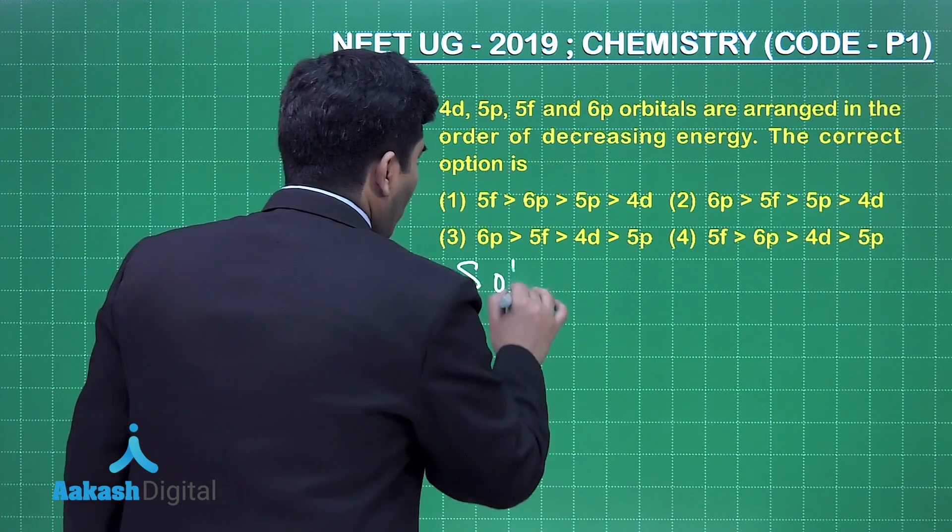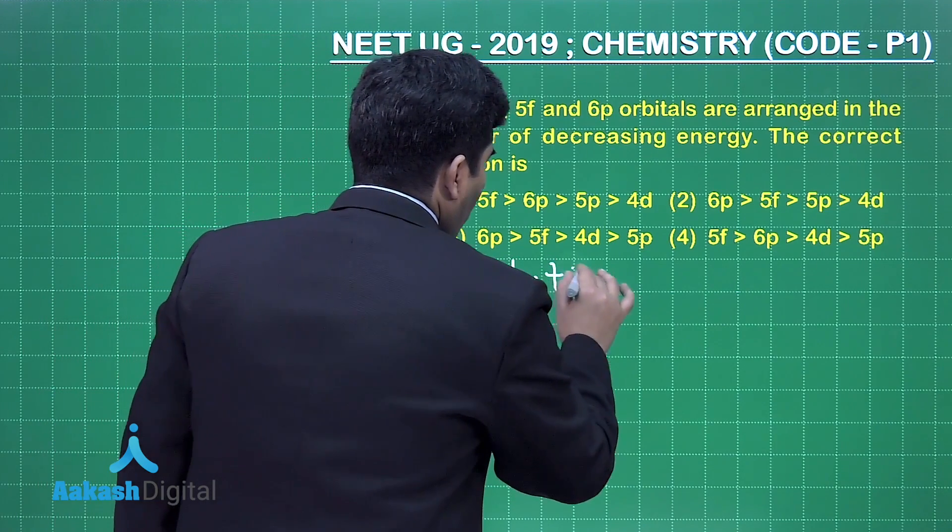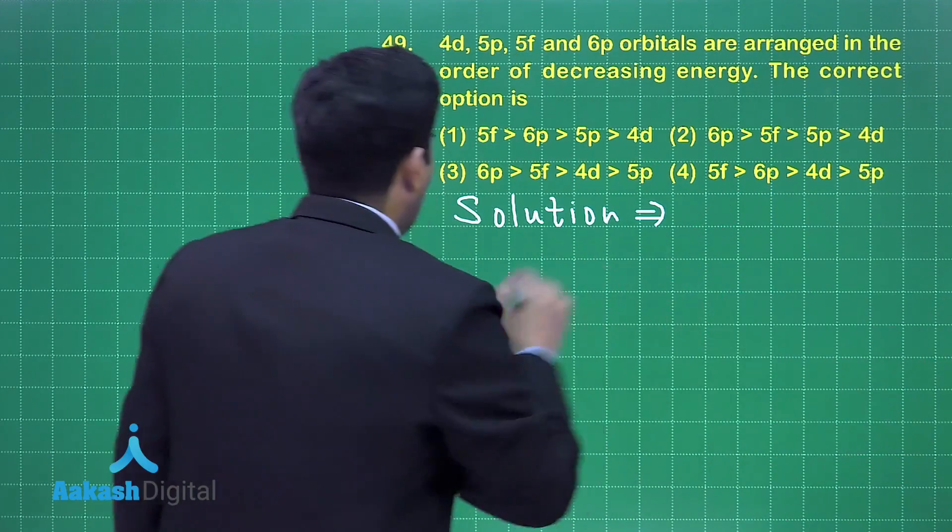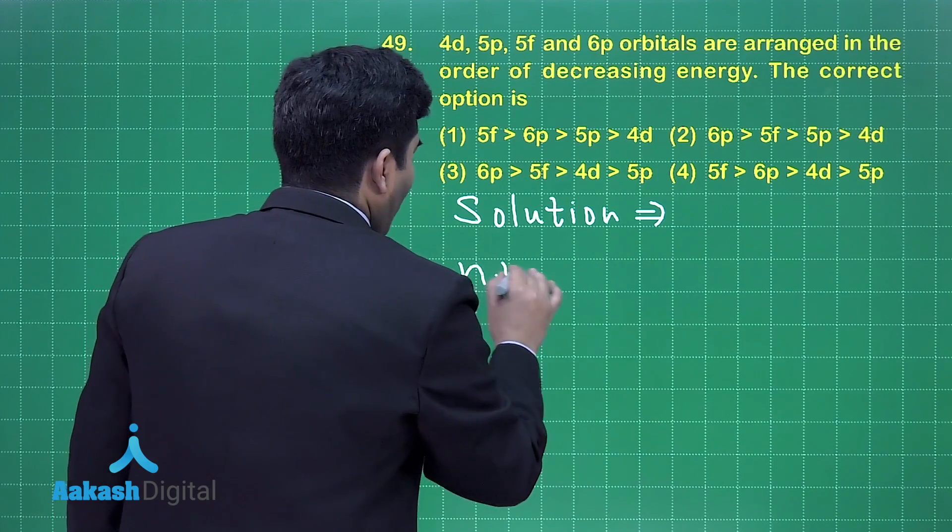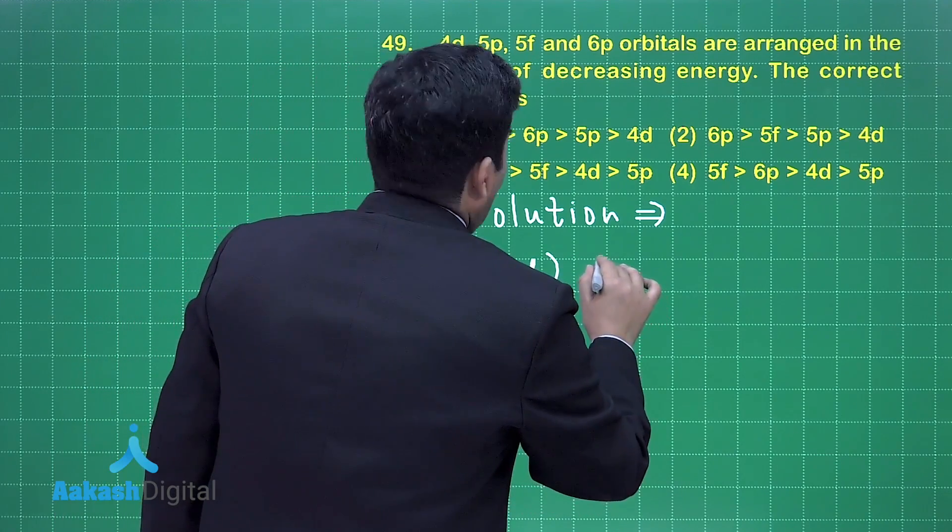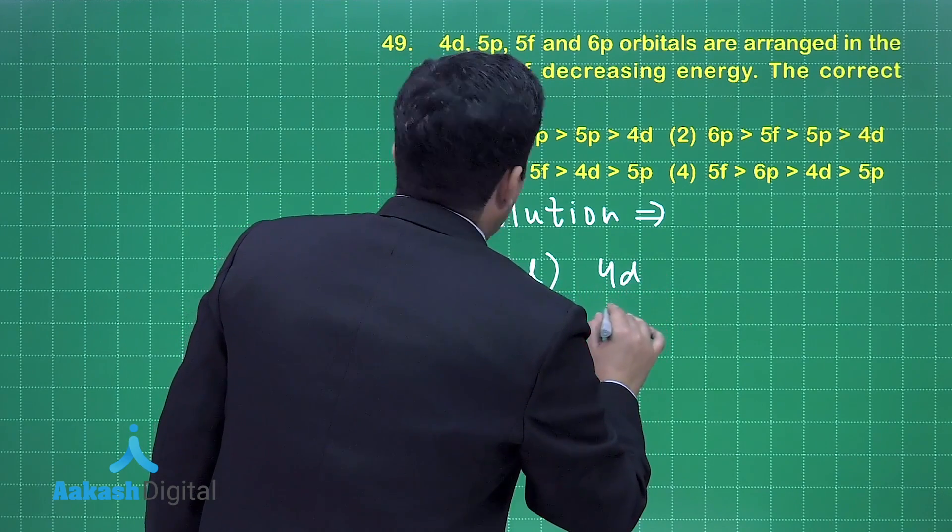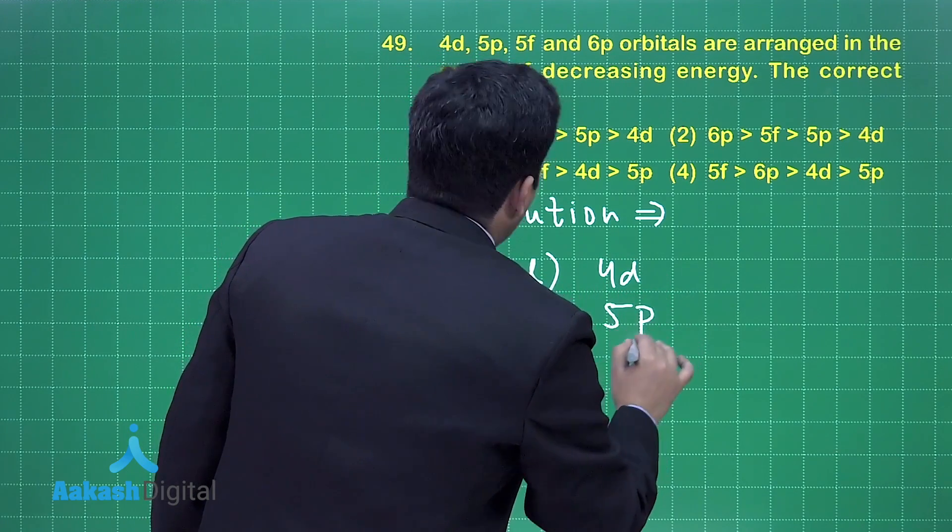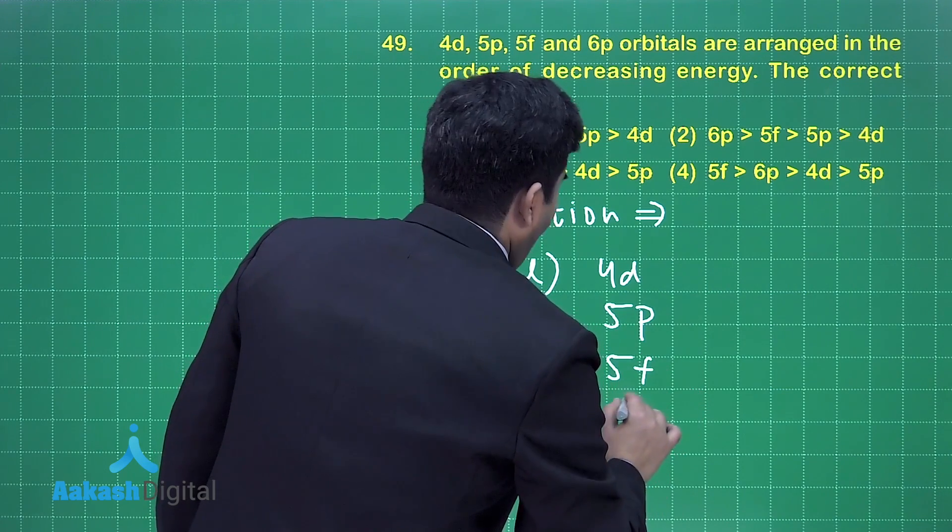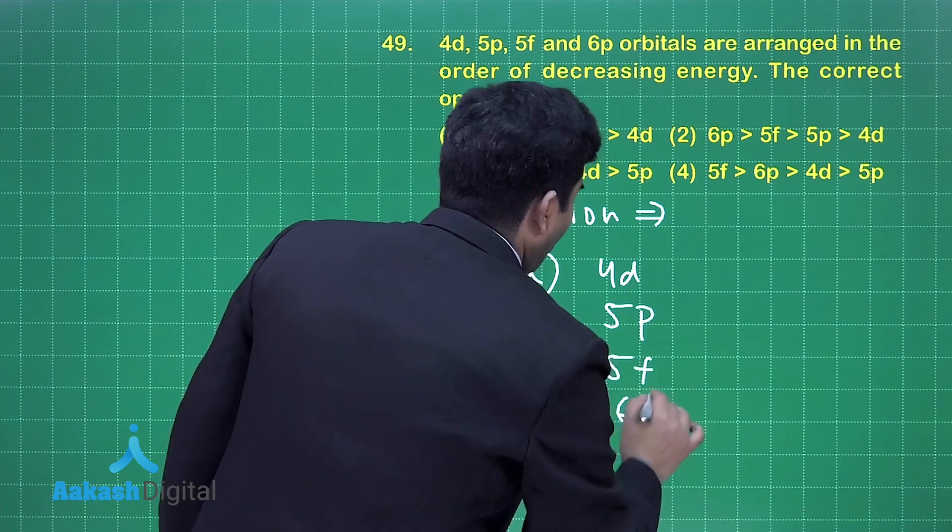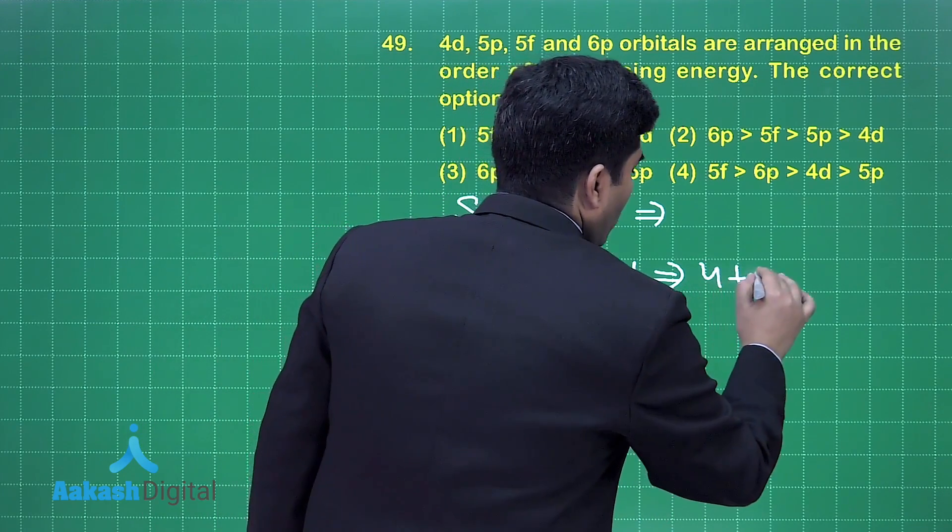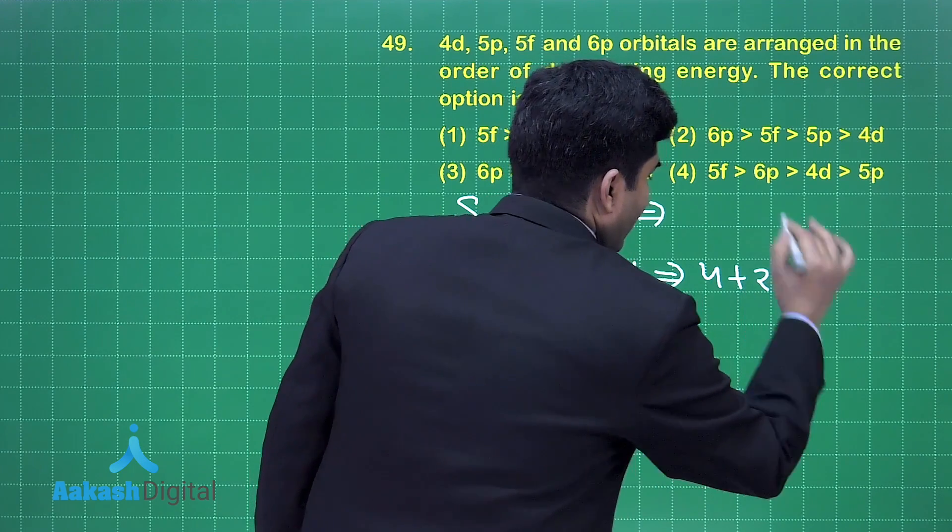So the solution is: first we have to find out the n+l value. So it is n+l value for 4d we have to find out, 5p we have to find out, and 5f we have to find out, and 6p we have to find out. And for this we have 4+2=6.